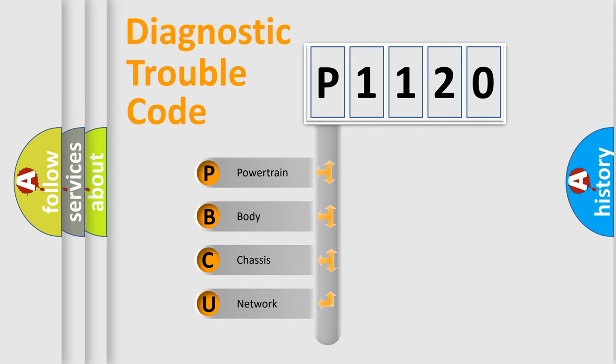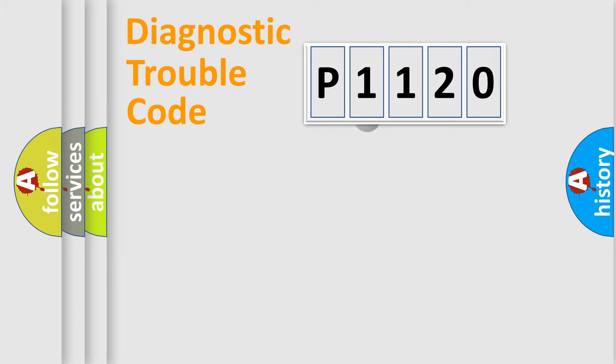We divide the electric system of the automobile into four basic units: powertrain, body, chassis, and network. This distribution is defined in the first character code.